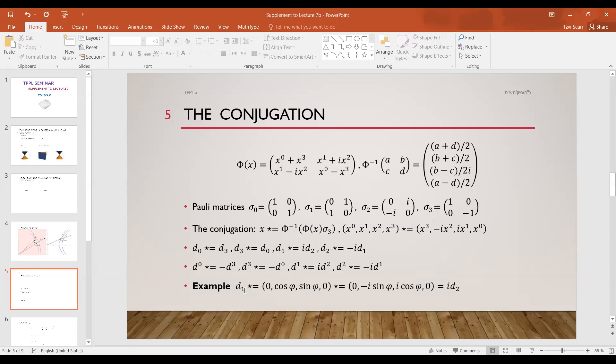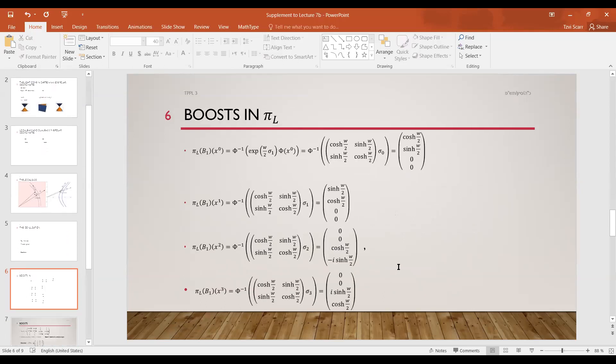And the conjugation is the way it acts on the basis vectors. For example, let's compute the star of d1. So d1 is 0, cosine phi, sine phi, 0. We apply the star, which means we have to switch x0 and x3, which are zero here anyway, and the second component is minus i times the third component here, so it's minus i sine. And then i cosine, which is exactly i times d2. And then the dual basis, similarly.